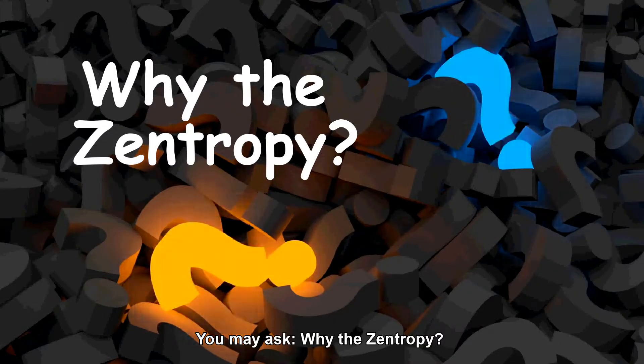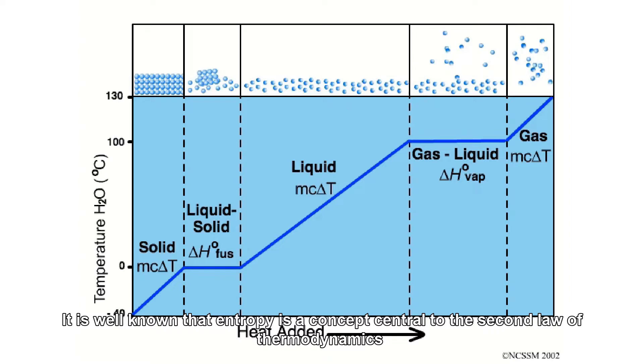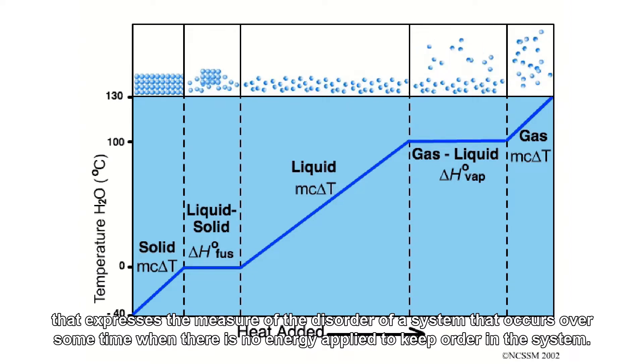You may ask, why Zentropy? It is well known that entropy is a concept central to the second law of thermodynamics that expresses the measure of disorder of a system that occurs over time when there is no energy applied to keep order in the system.